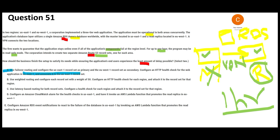Let's look at option A. The problem with A is that it talks about health checks but associates with only one region's record set — what about the other record set? It says to use failover routing to configure one record set as primary and the other as secondary. Primary and secondary is not allowed here because the question says the application must be operational in both areas concurrently — meaning at the same time. So both are primary; there is no primary/secondary configuration. Option A is wrong.